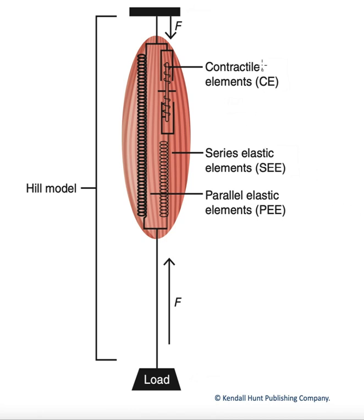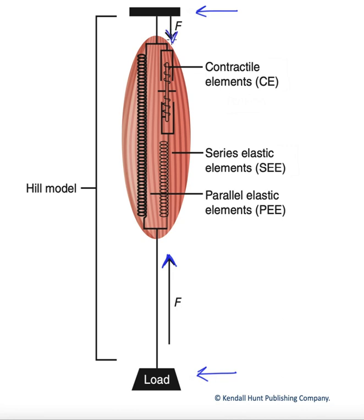In this model, we have our attachment points for our muscle. It would be attached by a tendon up to an anchor point up here. We've got an attachment point, in this case, to a resistance, a load that we're trying to move. And when the muscle contracts, we would generate force on those anchor points, pulling inward from both the top and bottom in this arrangement.